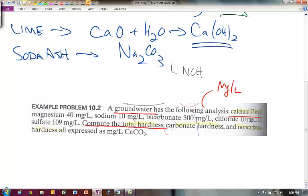Everything in here is in milligrams per liter of that specific constituent. We want to compute the total hardness, carbonate hardness CH, and non-carbonate hardness, all expressed in milligrams per liter as CaCO₃. We've got to do a bunch of conversions to do this.